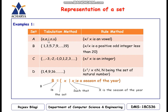For example, set A which contains all vowels: using tabulation method, A = {a, e, i, o, u}, written within a pair of brackets. Using rule method, A = {x | x is a vowel}. Second example: B = {1, 3, 5, 7, 9, ..., 19}, which are positive odd integers less than 20. Using rule method we can write this with a corresponding rule. Third example: C = {-3, -2, -1, 0, 1, 2, 3}, which using rule method is C = {x | x is an integer}.